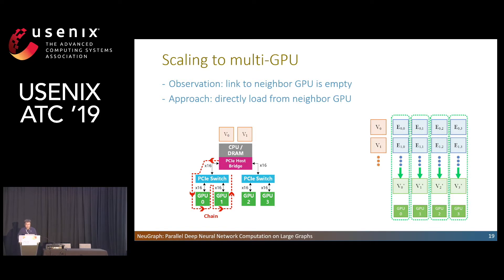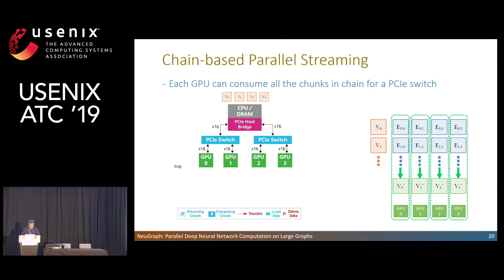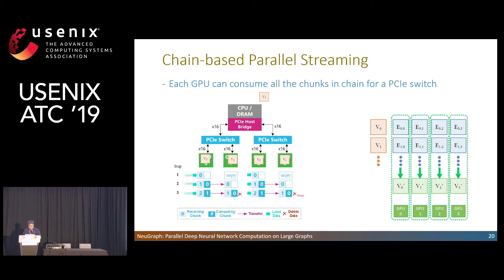Therefore, we formulate GPUs within the same PCIe switch as a chain to collaborate on GNN processing. Here is an example. First, the leftmost GPUs 0 and 2 in each PCIe switch load chunk V1 from host memory. Then GPU 1 loads chunk V1 from GPU 0 and GPU 3 loads chunk V1 from GPU 2. Meanwhile, GPUs 0 and 2 load chunk V2 from host memory. Then GPU 1 and 3 delete the consumed chunk and load the next chunk from GPUs 0 and 2, while GPUs 0 and 2 load chunk V3 from host memory. The GPUs continue in the same manner for subsequent chunks.